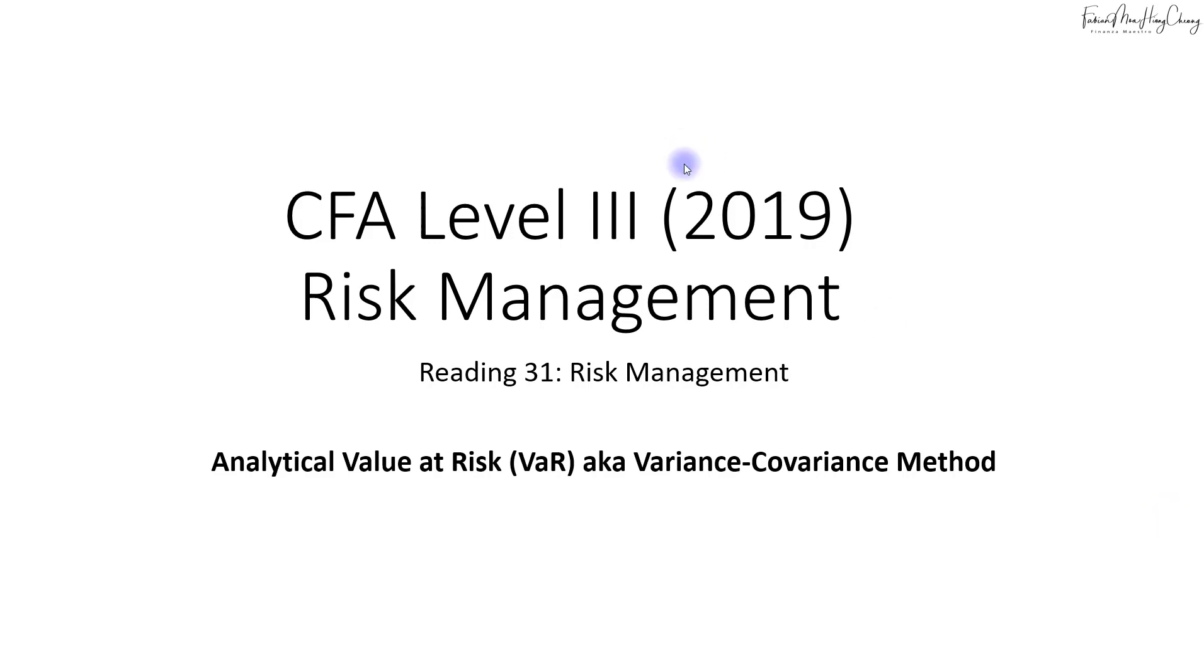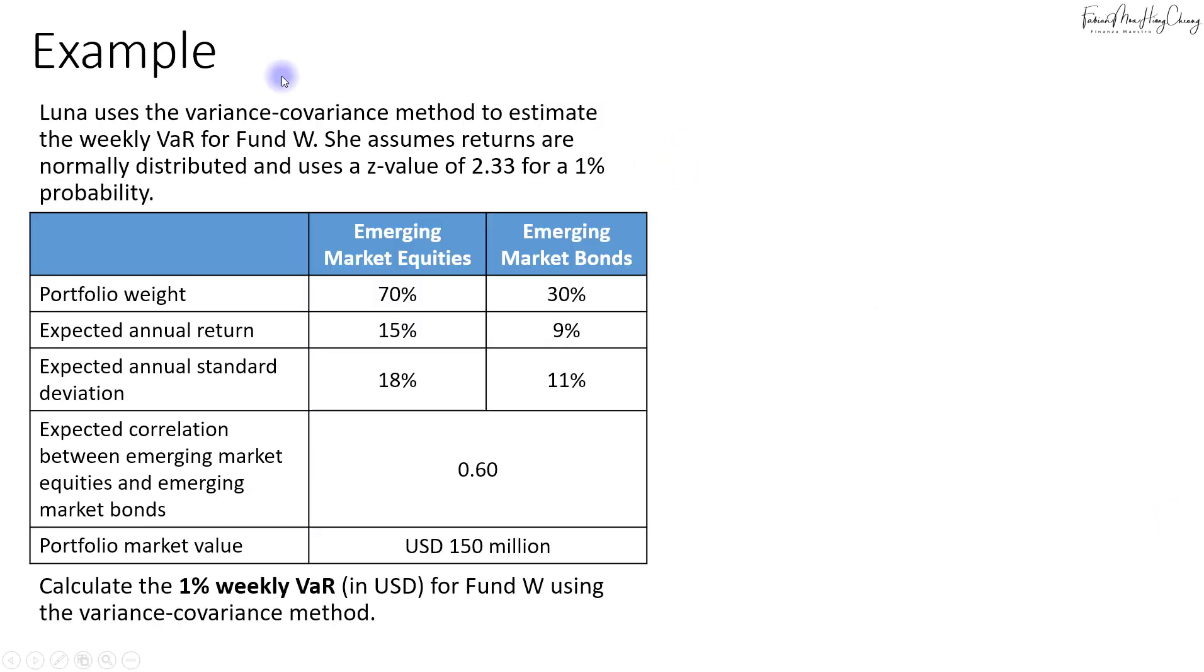In this example, we'll look at Luna who uses the variance-covariance method to estimate the weekly VaR for Fund W. She assumes that returns are normally distributed and uses a z-value of 2.33 for a 1% probability. Under Fund W we have two asset classes: emerging market equities and emerging market bonds.